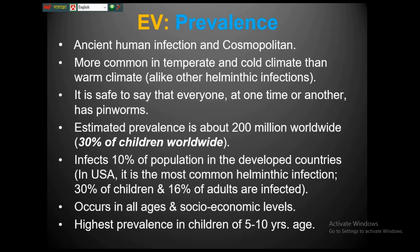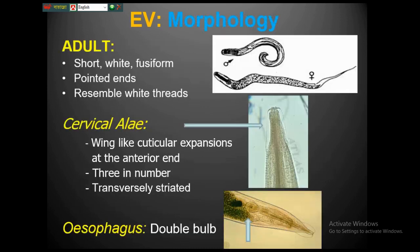Unlike other helminthic infections that predominantly affect lower socioeconomic groups, enterobiasis can affect all ages and socioeconomic levels. However, five to ten years of age shows the highest prevalence of enterobiasis.